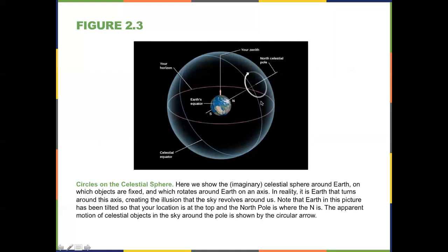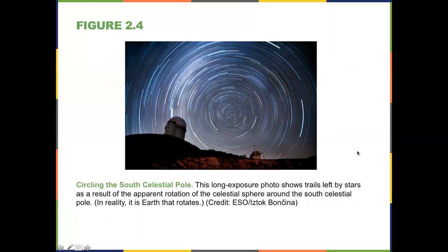From our perspective here on Earth, it would seem like the whole sky is going around us. That's why for the longest time in human history, people thought the universe revolved around us. If you were to take a time-lapse photo of one of these polar regions, you would see something like star trails circling the pole.